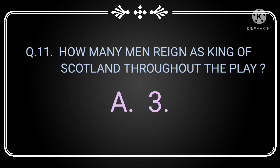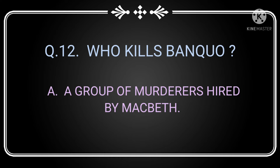Question number 11: How many men risen as king of Scotland throughout the play? The answer is 3. Question number 12: Who kills Banquo? The answer is a group of murderers hired by Macbeth.